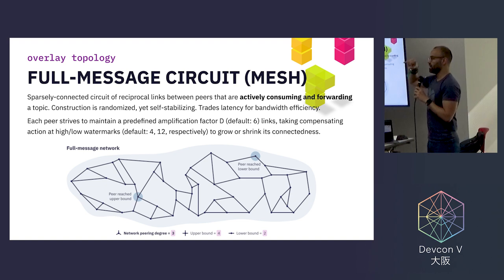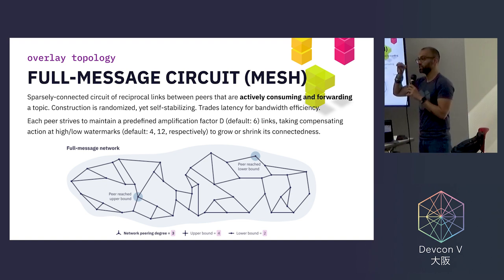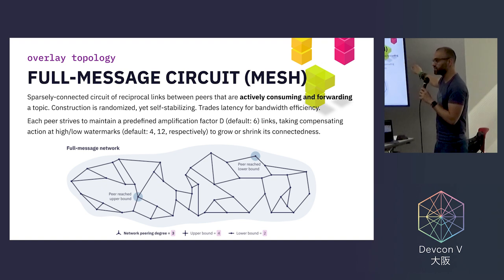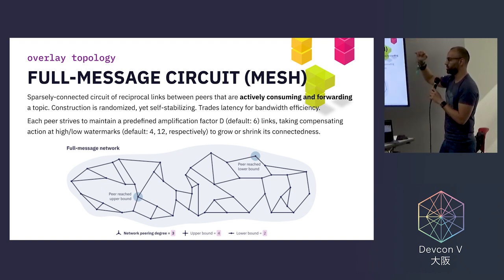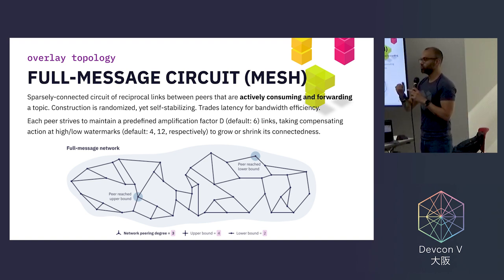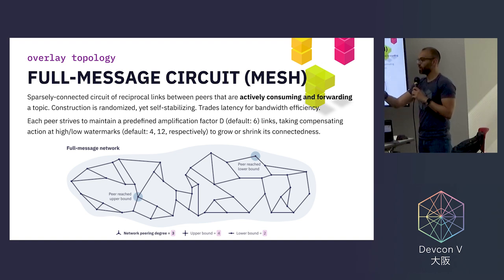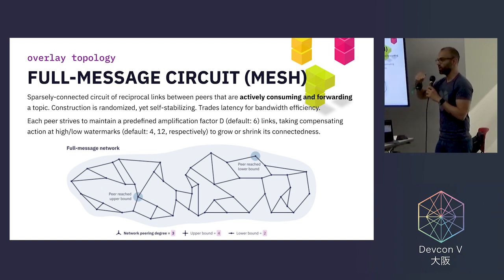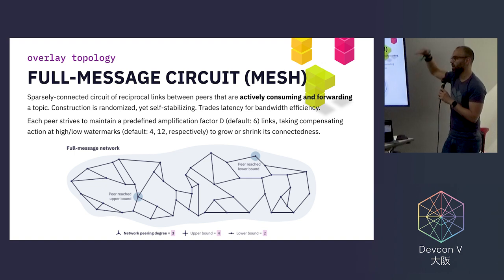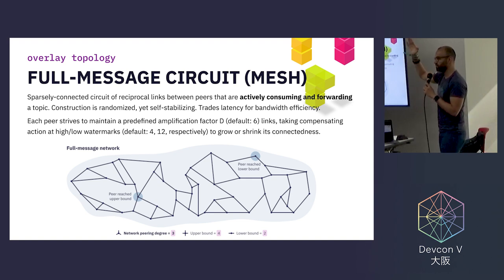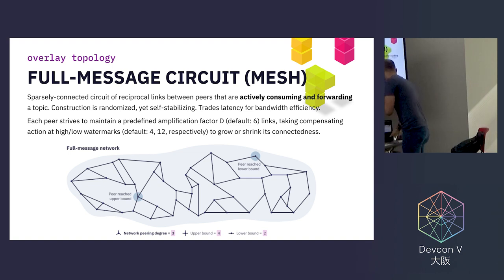The construction of the mesh is randomized and self-stabilizing, with stabilizing parameters particularly around degree. The mesh is configured with a target degree — by default six — with a low water mark of four and a high water mark of twelve. Peers strive to maintain connectedness for a particular topic at an optimal level of six, taking compensating action whenever it goes below the low water mark or above the high water mark.